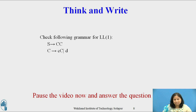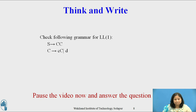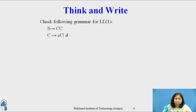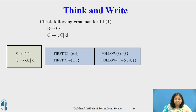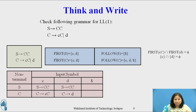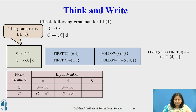Till now we considered what we mean by LL1 grammar. Now pause this video and reflect on this question for a minute or two and write your response. The question is: check the following grammar for LL1 — S derives CC; C derives c C or d. Considering the grammar with its first and follow sets, first(c C) that is {c} intersected with first(d) that is {d} equals φ. The condition of LL1 grammar is satisfied and the parsing table does not have multiply defined entries, hence this grammar is LL1.